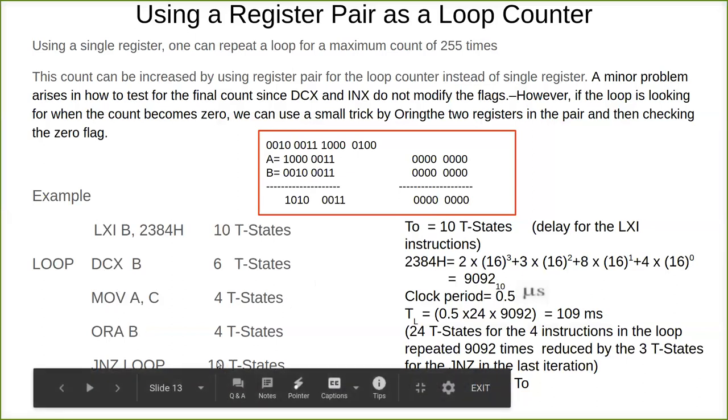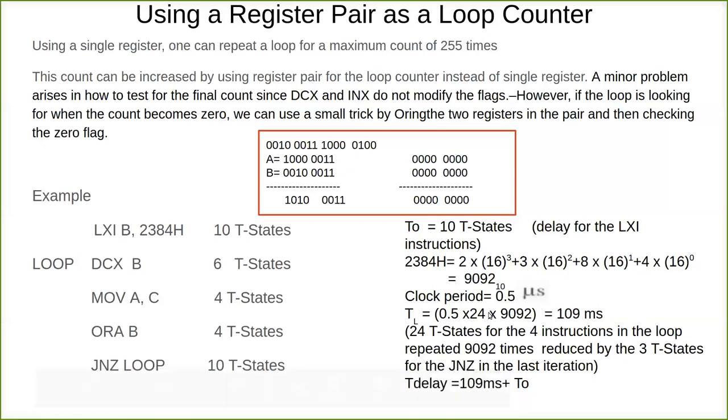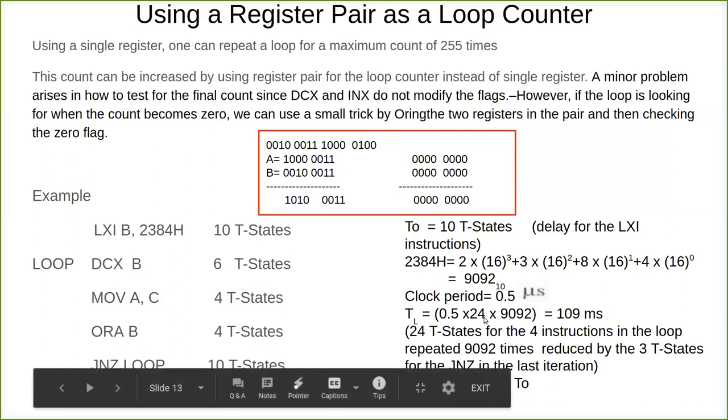If you add that: 10 plus 4 plus 4 plus 6, it is 24. So 24 times 0.5, that is the clock period. So 0.5 into 24 into 9092 T-states. 24 T-states into 9092 times this will be executed.